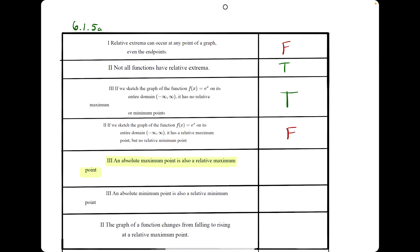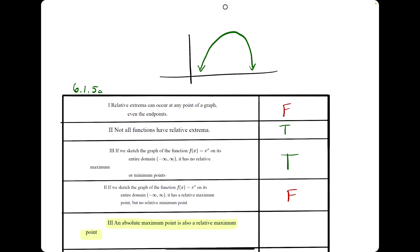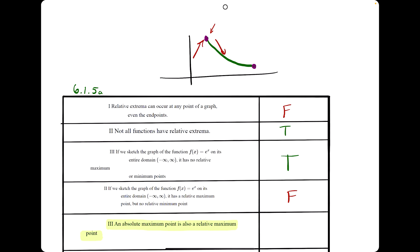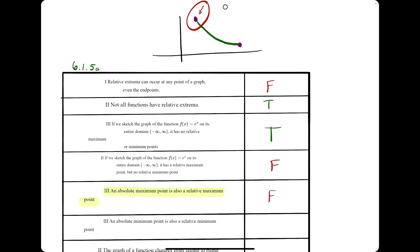The next statement says an absolute max is also a relative max. If we consider a function where the absolute max is at the top and the function changes from increasing to decreasing, then it is also a relative max. But if the absolute maximum is at an endpoint, relative maximums cannot occur at endpoints — there can be no change from increasing to decreasing if the function just cuts off there. So this is an absolute max but not a relative max. Therefore, this statement is false because it's sometimes true, but not always.